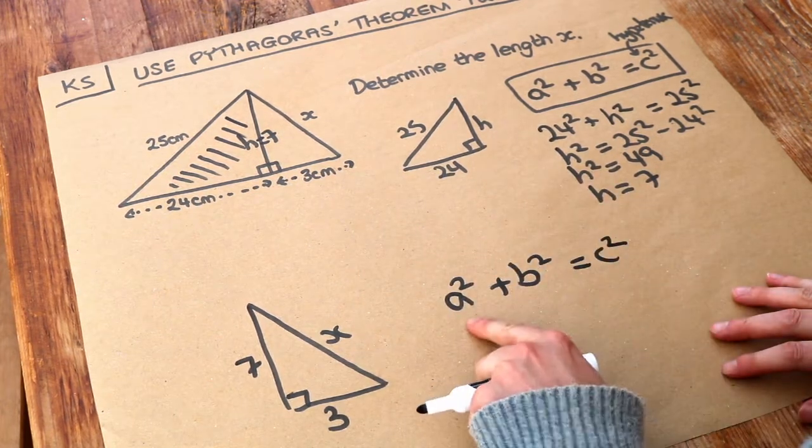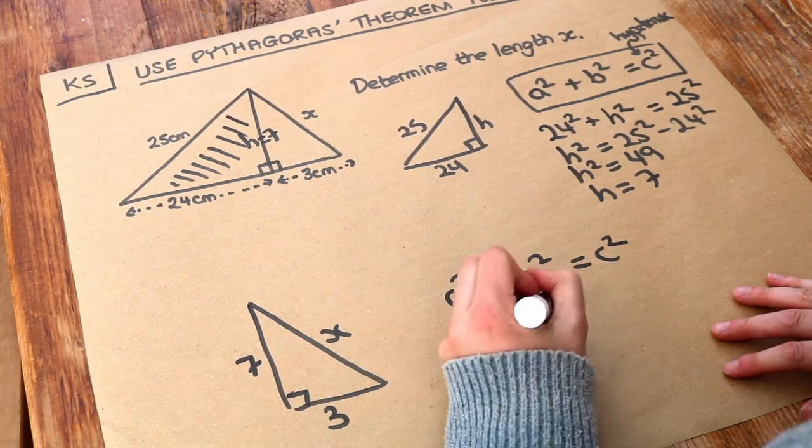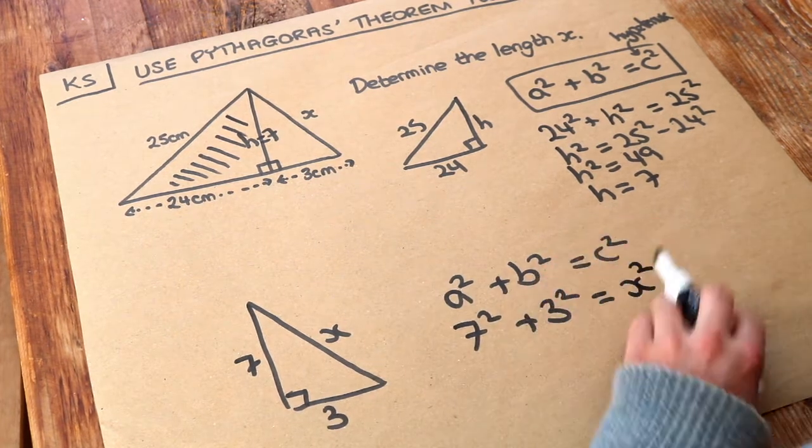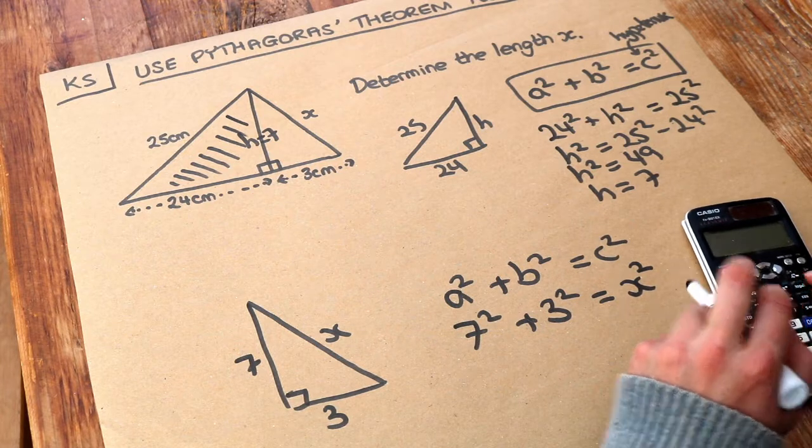Let's take one of the shorter length squared, so say the 7 squared, plus the other shorter length squared, and that is equal to the hypotenuse squared. Just put that into our calculator, 7 squared plus 3 squared, we get 58.